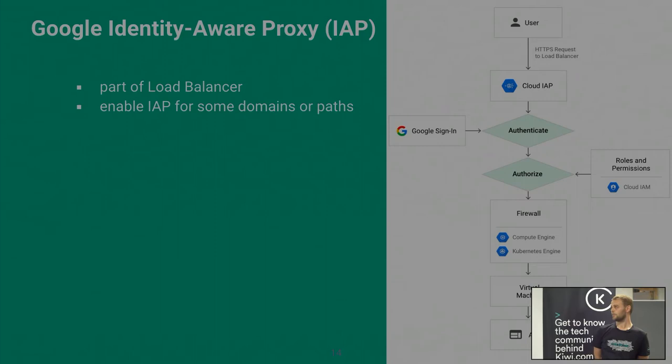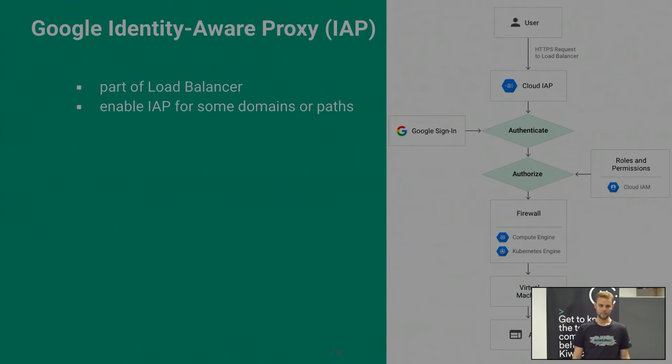You can enable the IAP either for some paths of your service or the whole domain. So if you have foo.mycompany.com, you can enable it for some subpaths or for the whole domain or subdomains. You can have internal.tool.mycompany.com behind IAP and nobody will be able to access it.